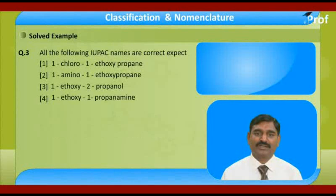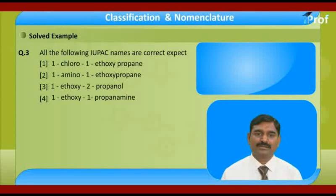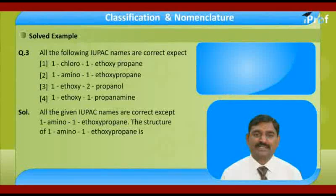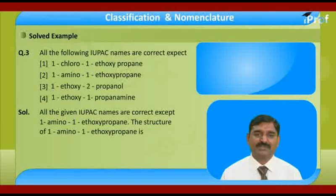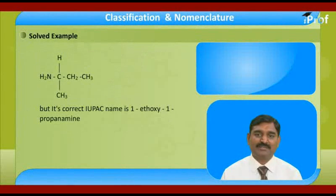Third problem: all the following IUPAC names are correct except one. The four names given are: 1-chloro-1-ethoxy-propane, 1-amino-1-ethoxy-propane, 1-ethoxy-2-propanol, and 1-ethoxy-1-propan-amine. Checking each: 1-amino-1-ethoxy-propane is correct, 1-chloro-1-ethoxy-propane is correct, 1-ethoxy-2-propanol is correct, and 1-ethoxy-1-propan-amine is also correct. That's why only the name written as '6-chain' is the wrong IUPAC name.